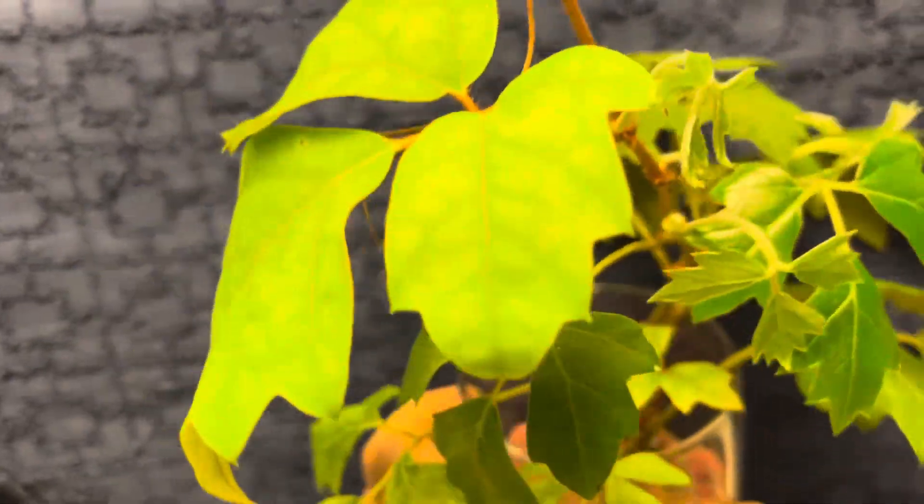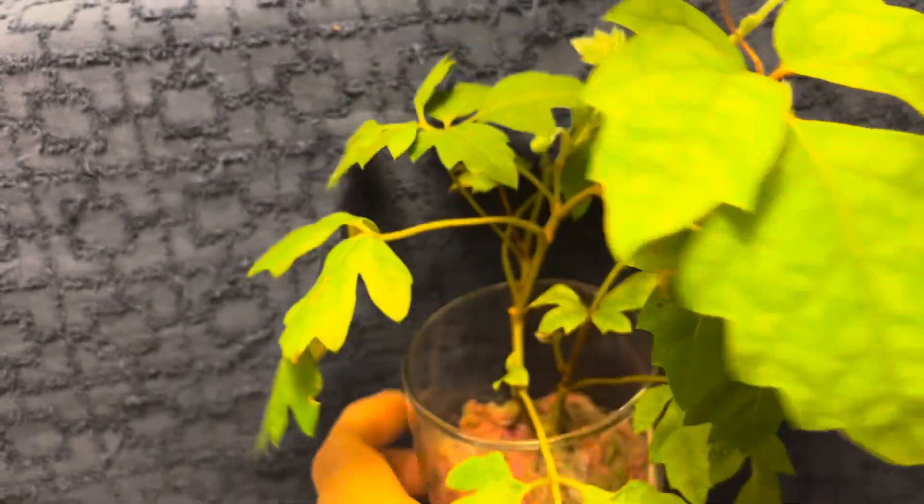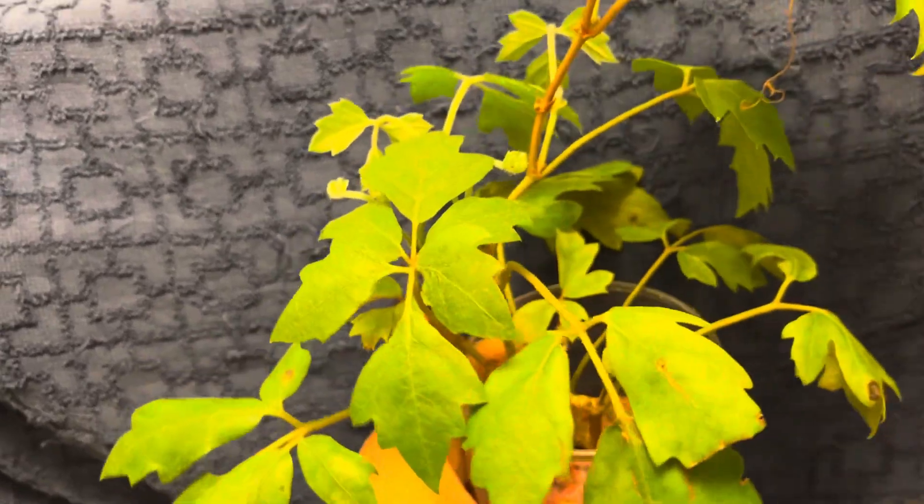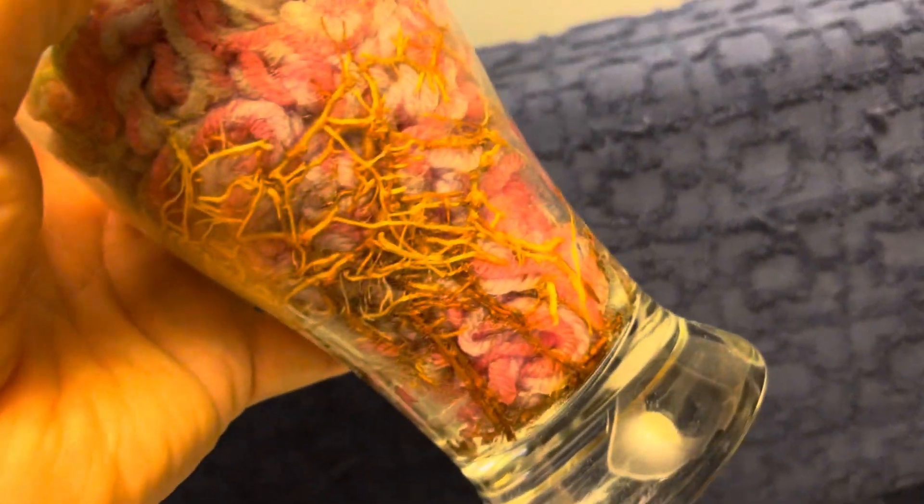These are the old leaves. You can see the old leaves are yellowing a little, but now that it's getting the orchid fertilizer it's doing much better. And look at these roots, gotta love these roots.